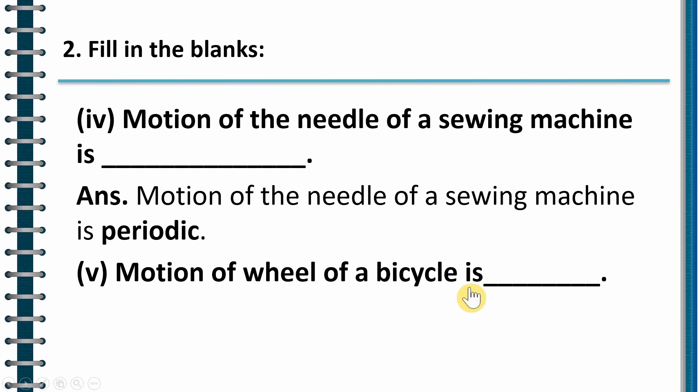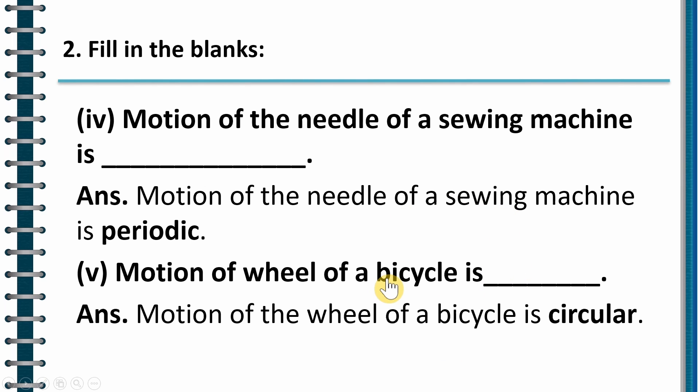Motion of wheel of a bicycle. Now bicycle wheels, if you have observed, it goes round and round. So this is what? Circular motion. Correct? Circular motion.